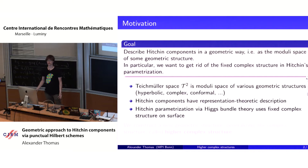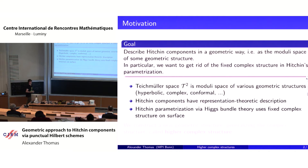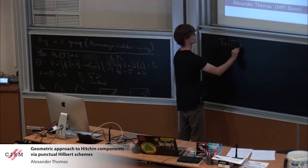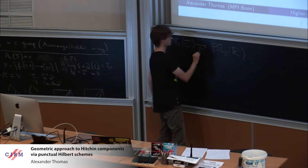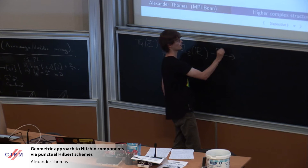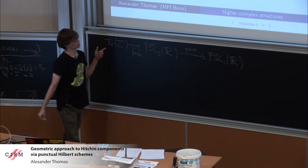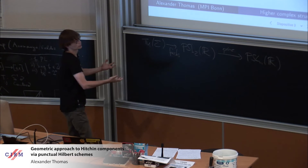But if you look at higher rank, the Hitchin component can be described in a representation-theoretic way: you start from a Fuchsian representation of your fundamental group into SL(2,ℝ), and then there's a canonical map called the principal map going to PSL(n,ℝ). It happens that all these morphisms lie in one component called the Hitchin component.